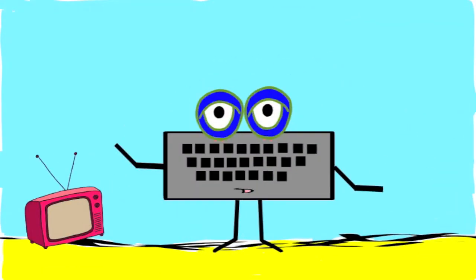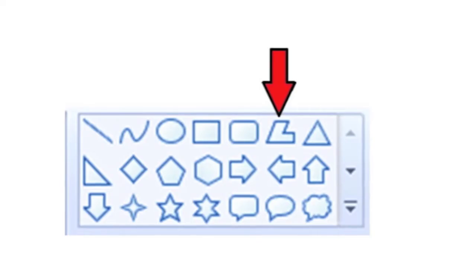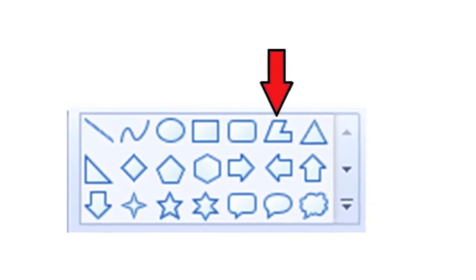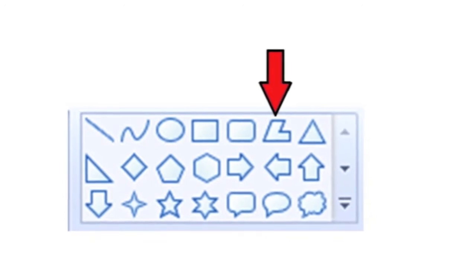Hi kids, it's your old pal QWERTY back to talk about the Polygon tool in Paint. A polygon is a plain shape with straight sides, usually more than five. The Polygon tool in Paint can be used to make all kinds of awesome stuff.